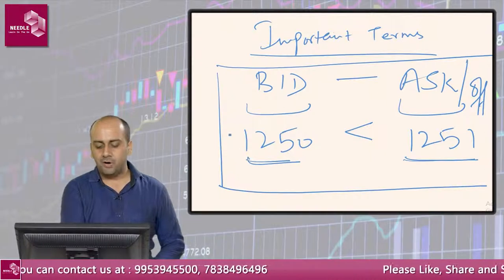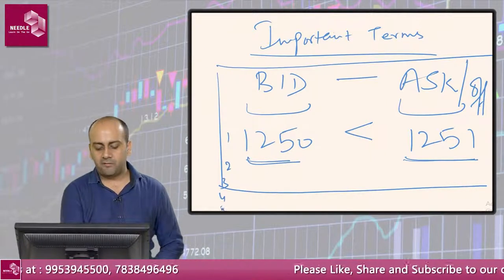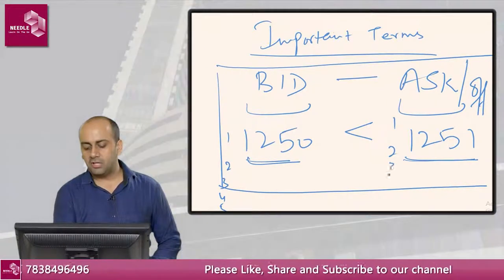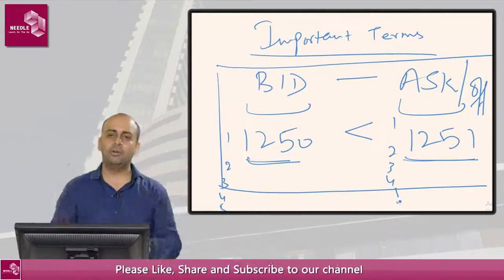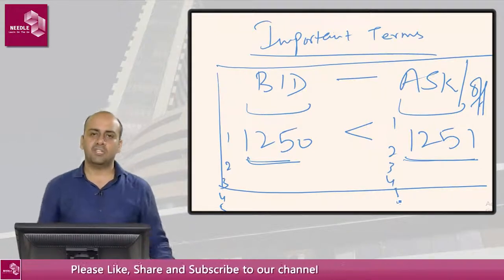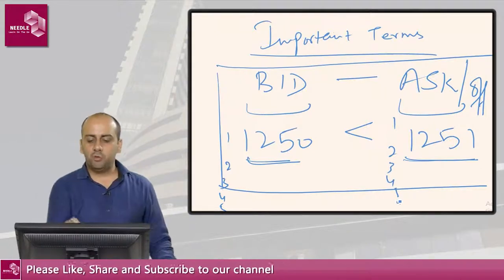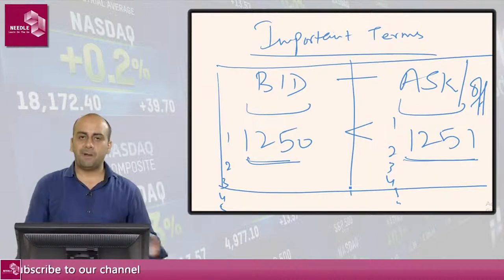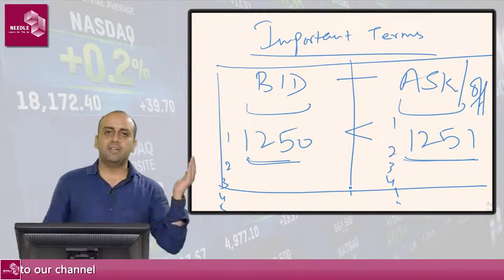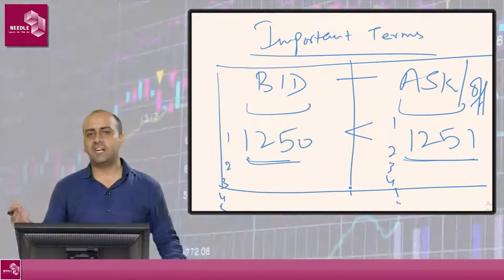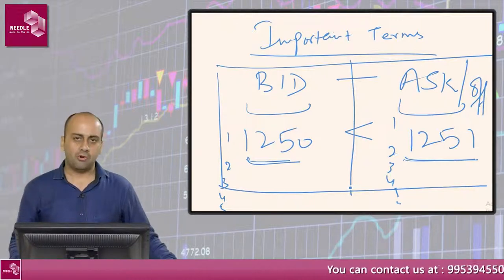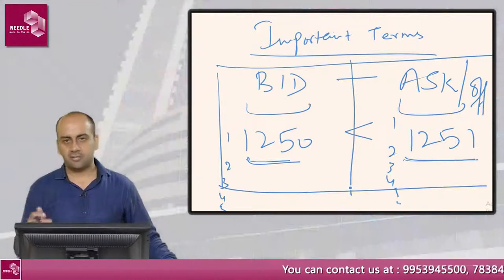There will be multiple bids and asks listed — bid 1, bid 2, bid 3, bid 4, bid 5, ask 1, 2, 3, 4, 5, and so on. This table is called the order book. The left side of the table shows all bidders, and the right side shows all offers.